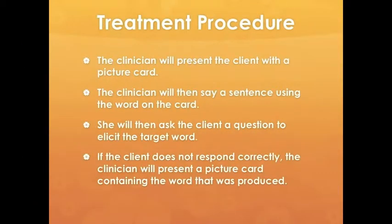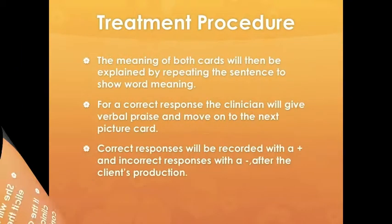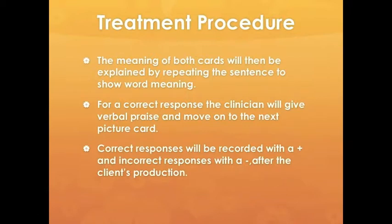The clinician will present the client with a picture card and say a sentence using the word on the card. She will then ask the client a question to elicit the target word. If the client does not respond correctly, the clinician will present a picture card containing the word that was produced. The meaning of both cards will then be explained by repeating the sentence to show word meaning. For a correct response, the clinician will give verbal praise and move on to the next picture card. Correct responses will be recorded with a plus and incorrect responses with a minus.